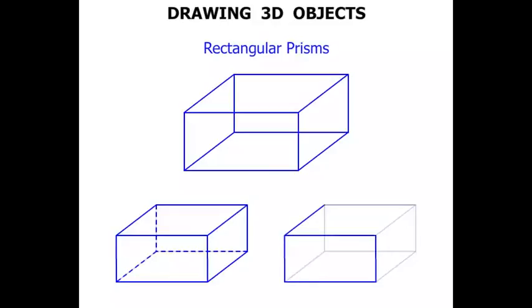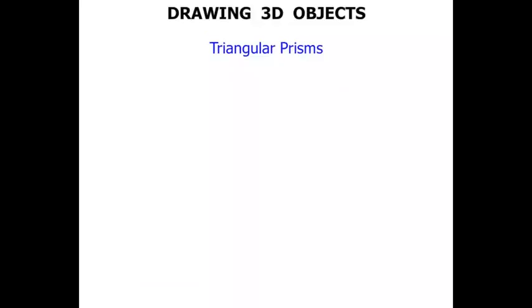What about triangular prisms? Alright, the same technique. Start with a triangle. Then we'll draw the same triangle to the right and upper bit. Let's join up the corners with the edges. And there we have it. A pretty good looking triangular prism.